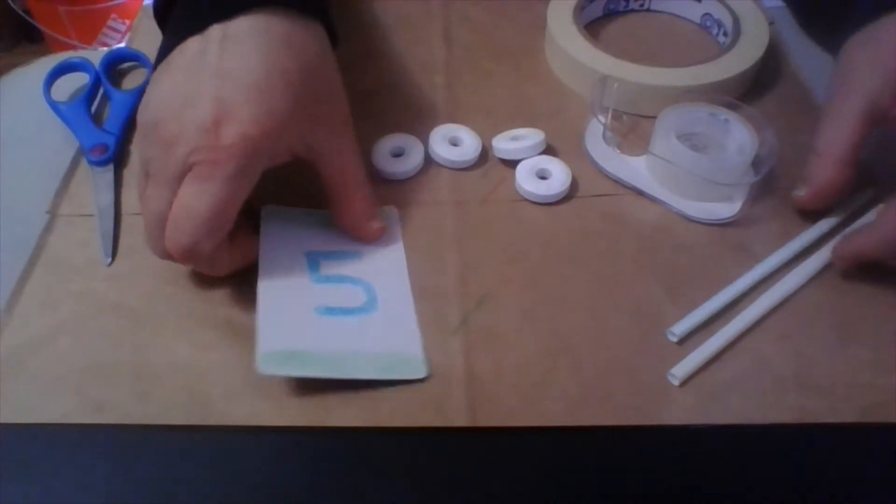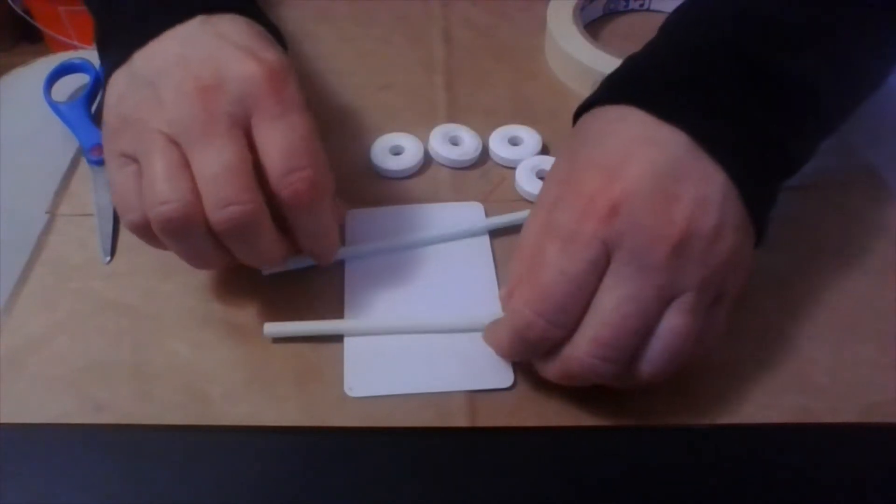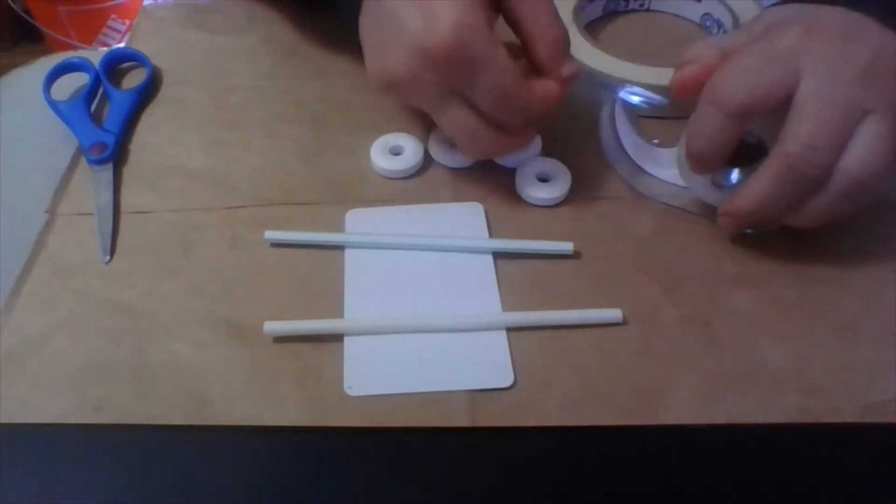Now what I'm going to do is flip my car over and I'm going to put on my axles. The straws are my axles of my simple machine.